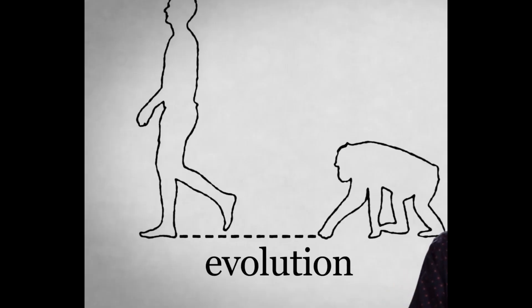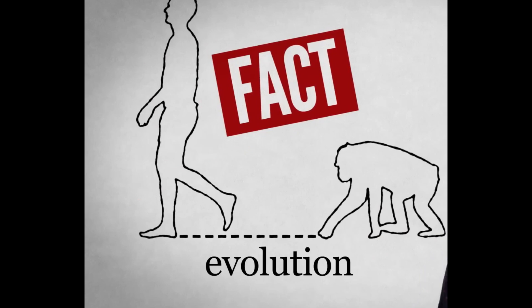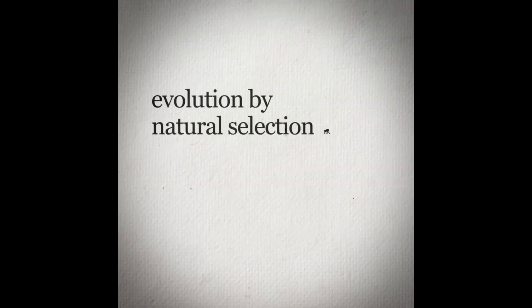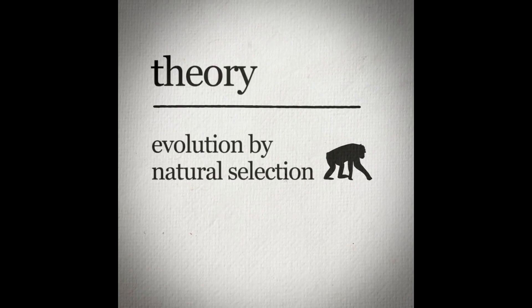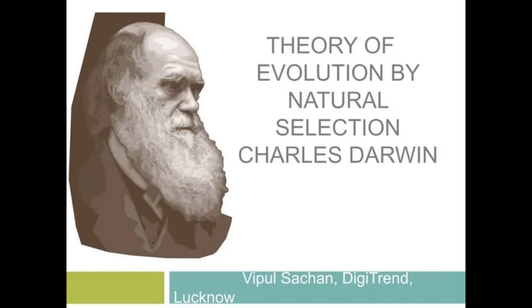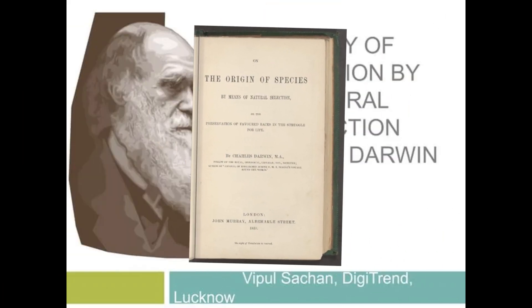Now you're probably asking, well I thought it was called the theory of evolution. Well, it's not. That's an abbreviation for the theory of evolution via natural selection. You see, natural selection is the mechanism of evolution. It's the theory that explains the fact of evolution.